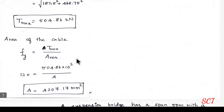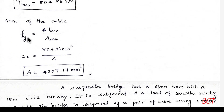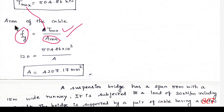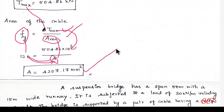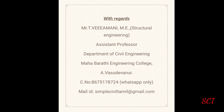Stress equals load divided by area, so Fy = T_max / Area. Rearranging: Area = T_max / Fy = 504.86 kN / 120 N/mm² = 4207.17 mm². Thank you.